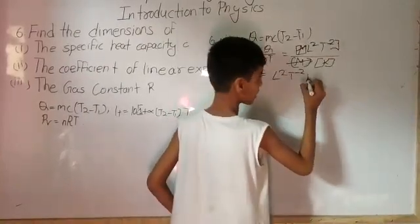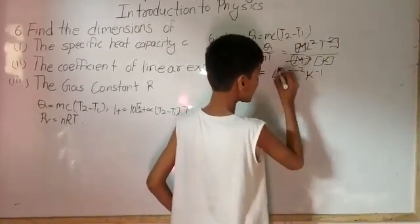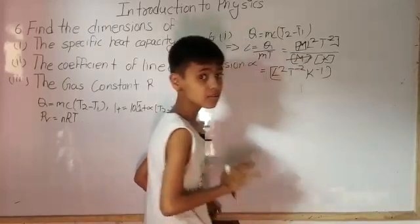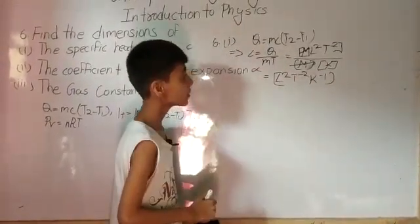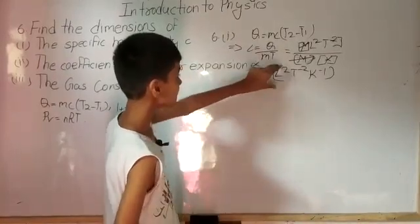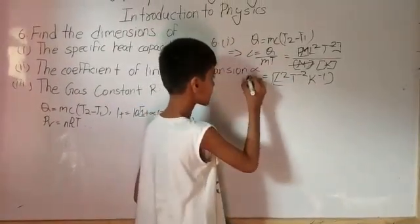As this K will come in numerator, its power will be converted in negative symbol. As power on it was 1 because no power was given. We got L square T power minus 2, K power minus 1. This is the dimensional formula for C.